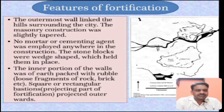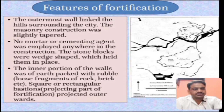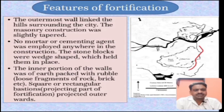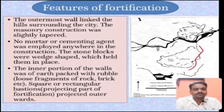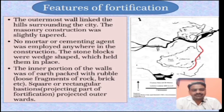You can see the layout plan of Hampi, which was the capital of Vijayanagara, and certain fortress walls are shown here. The outermost wall linked the hills surrounding the city. There used to be low rounded hills with certain passages to go out, but these passages were blocked by building walls with stone, becoming the outer circle of the fortress. No mortar or cementing agent was used, yet the wall was quite intact. The stone blocks were cut in wedge shapes and fixed with each other in an interlocking manner.